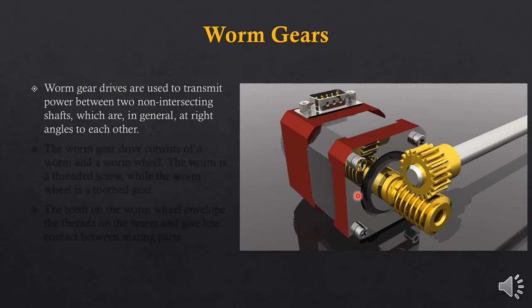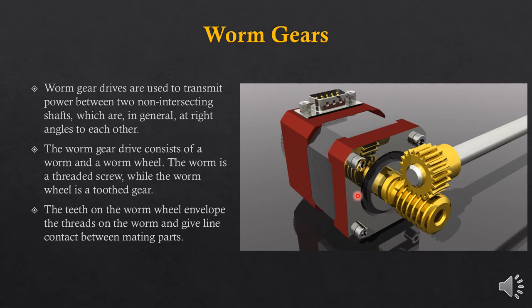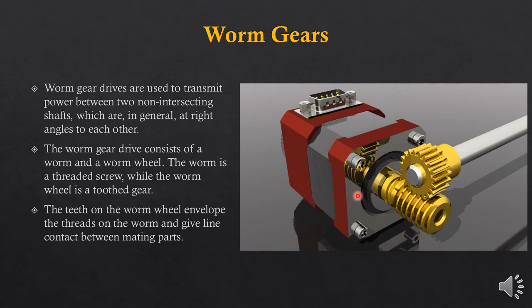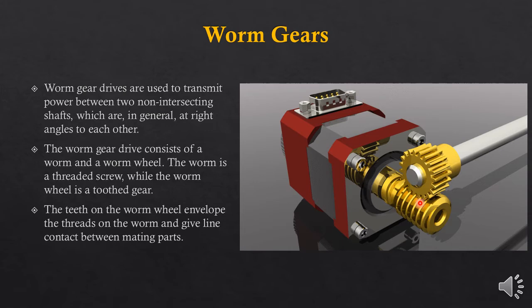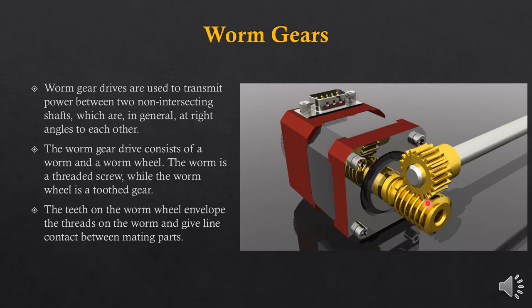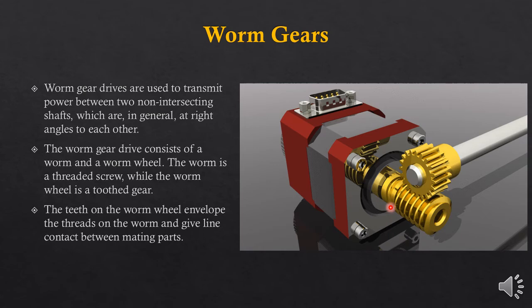The shafts are non-intersecting and are generally at right angles to each other. There are two major parts: the worm and the worm wheel. The teeth on the worm wheel envelope the thread on the worm — it meshes and envelopes the threads on the worm. Because of this, along the thread you will have line contact, not point contact as is the case with some other gears. Here you will have line contact between the two mating parts.